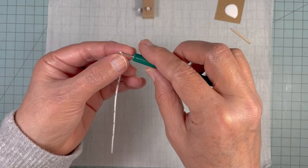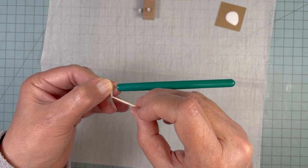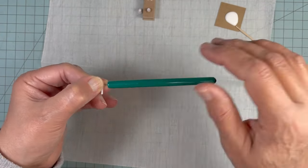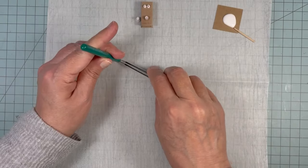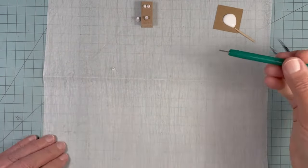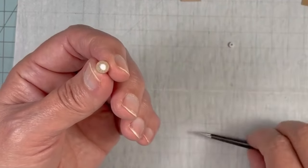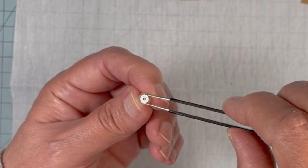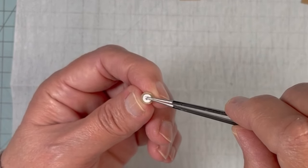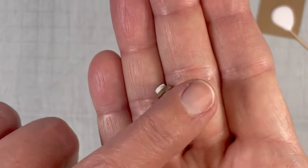This strip of paper is a sixteenth of an inch wide and five and a half inches long. I roll it up and I just keep it in a disc shape. And here I'm going to glue it to the back of my mouthpiece. And here is how the mouthpiece looks now.